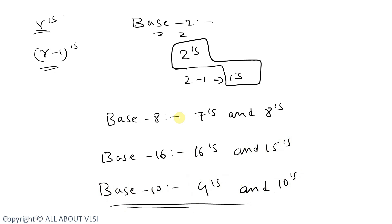So to summarize: for base 2 numbers we have 1's and 2's complement, for base 8 numbers we have 7's and 8's complement, for base 16 we have 15's and 16's complement, and for base 10 we have 9's and 10's complement. Now, why are we using these complements? What is the use?